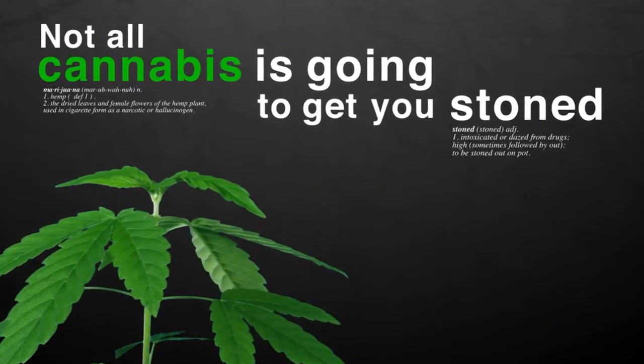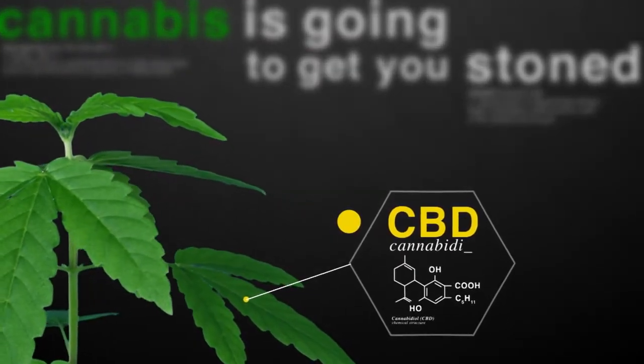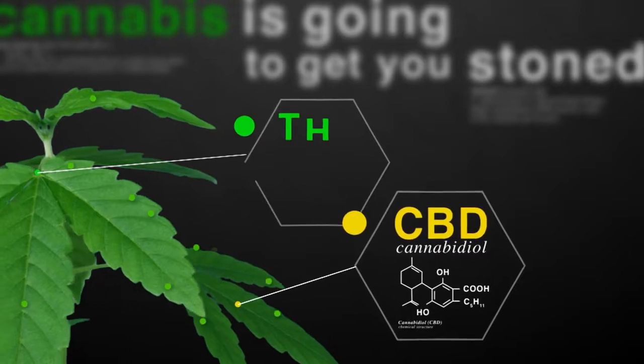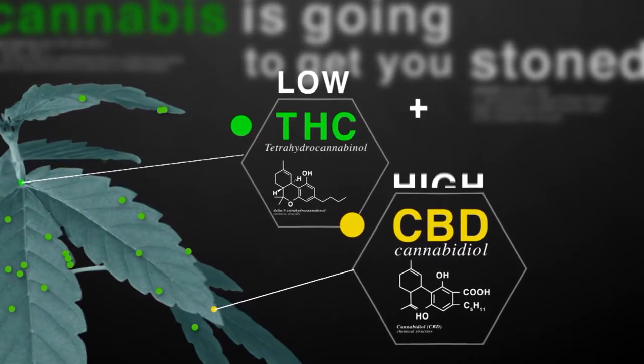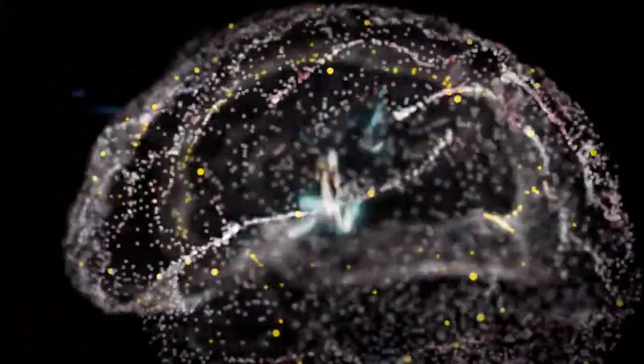That's because marijuana contains another chemical known as CBD. That's cannabidiol. Marijuana plants that have low THC and high CBD can work really well as a medicine. They can treat things like epilepsy. It works because the CBD chemical can quiet excessive electrical and chemical activity in the brain.